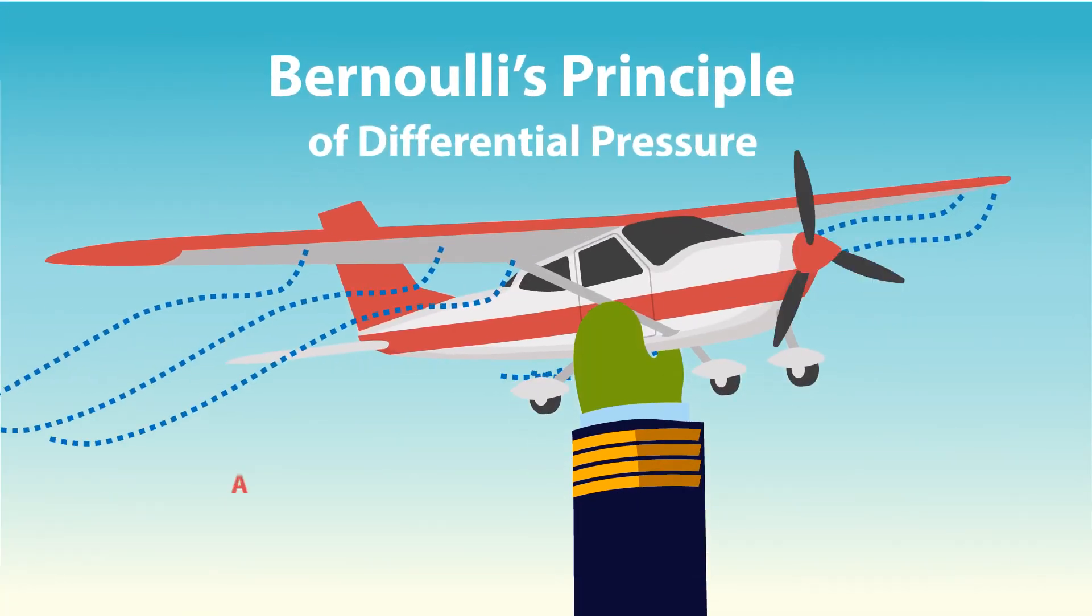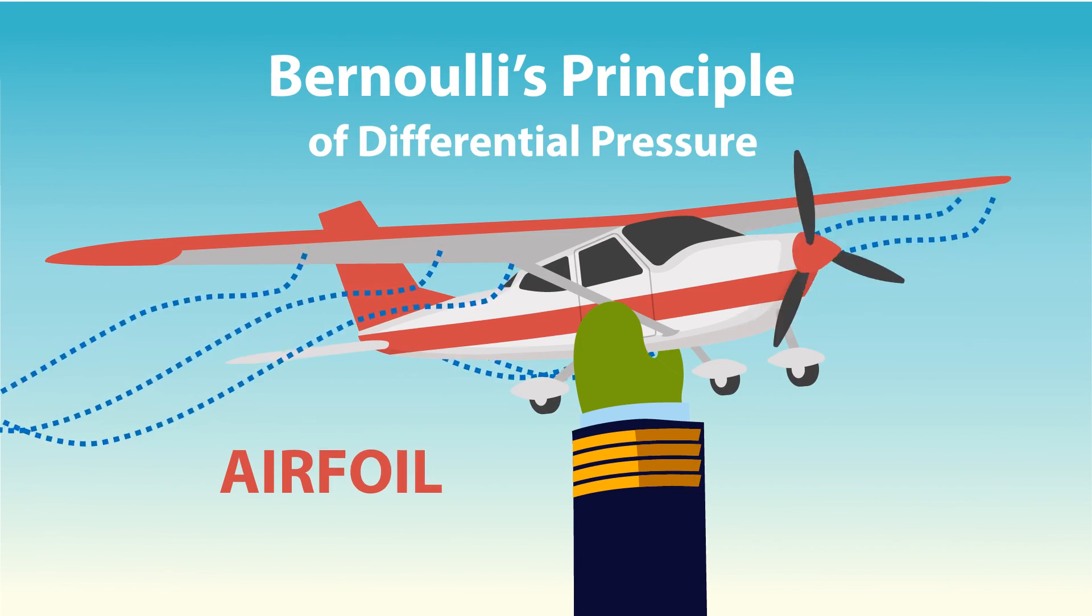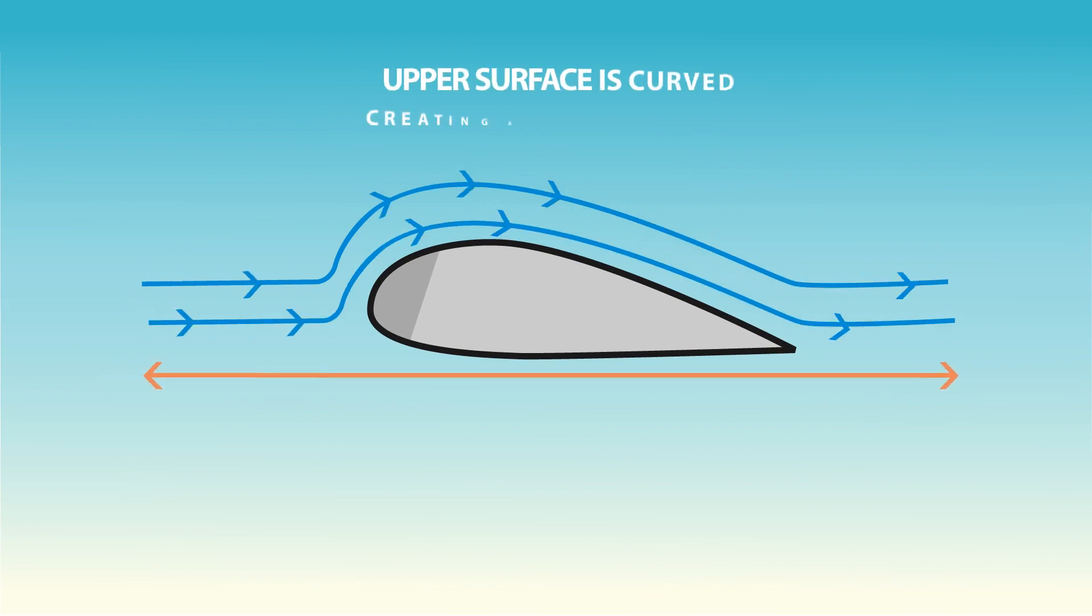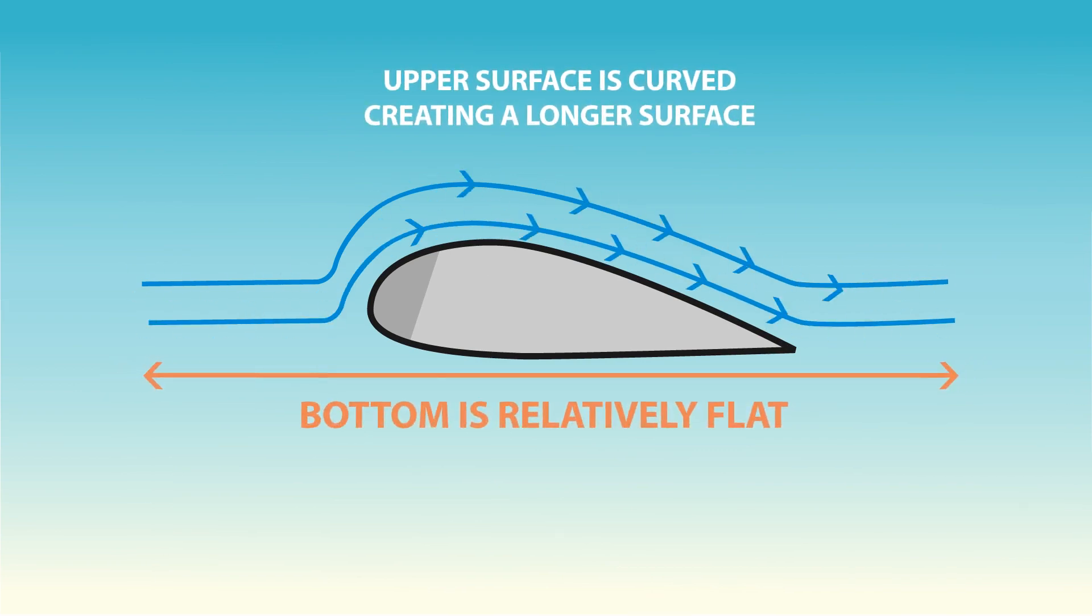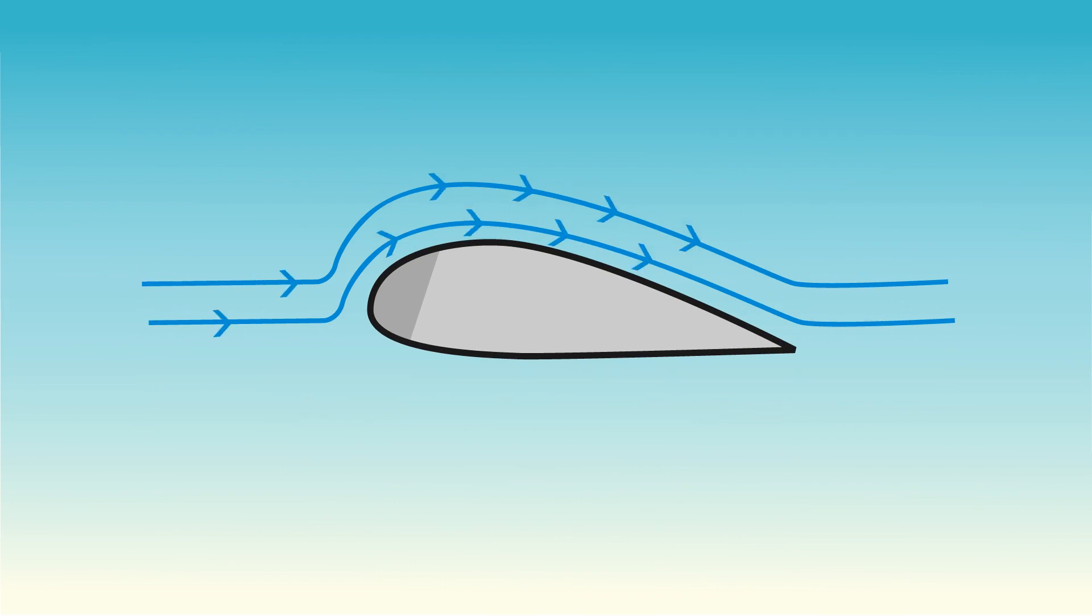Bernoulli's principle of differential pressure explains that because the wing is in the shape of an airfoil, meaning its upper surface is curved, creating a longer surface, air that flows over the top must travel faster than air that travels along the bottom, because the bottom is relatively flat, yielding a relatively shorter surface.